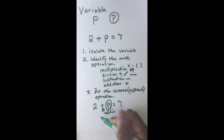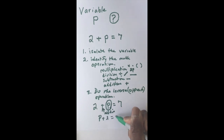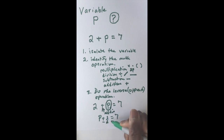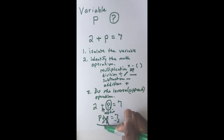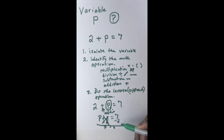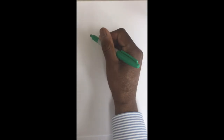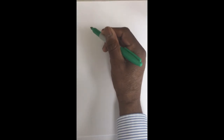So we have P plus 2 equals 7 — it's the same thing. We want to do the inverse, which is taking away 2, and we have to do that on both sides. This is going to leave us P, and when we do the math it gives us 5. So P is equal to 5. We've solved our equation.